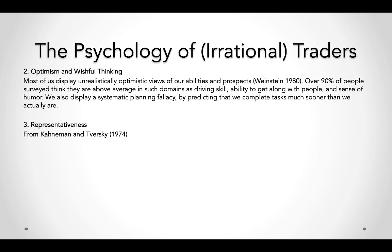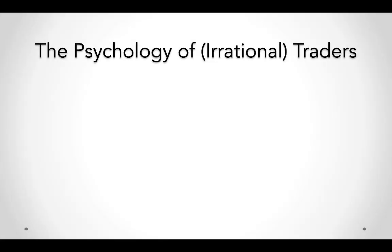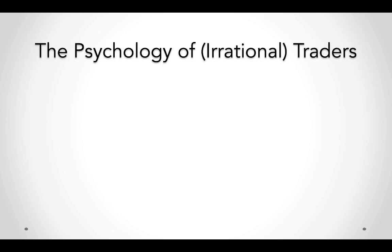Representativeness: recall the Linda example — she is 31 years old, single, outspoken and very bright, majored in philosophy, deeply concerned with discrimination and social justice, and participated in anti-nuclear demonstrations. Is she a bank teller, or a bank teller active in the feminist movement? We use representativeness to judge, falling into conjunction fallacy — it's actually more likely she's just a bank teller than a bank teller and feminist activist, since the conjunction of two events is always less probable.